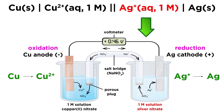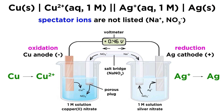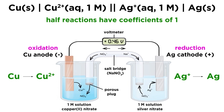Then we describe the cathode solution — in this case silver ions — along with concentration. Then there is another vertical line to signify the phase boundary between the cathode solution and the cathode itself, and lastly the material in the cathode, which is solid silver. Note that spectator ions such as nitrate and sodium ions are not listed, and the simplest form of each half-reaction is shown, so all coefficients are one.